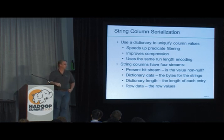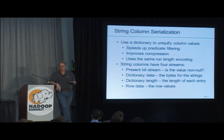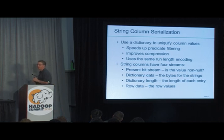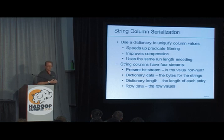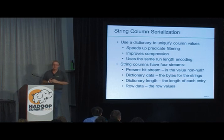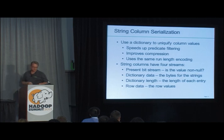For strings, I use dictionary encoding because string columns often have low cardinality. By building a dictionary, you convert a string column into an integer column with nice compression properties. String columns have four streams: present (null indicator), dictionary data, dictionary length, and row data. All are compressed using the same run-length encoding.